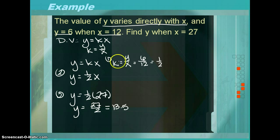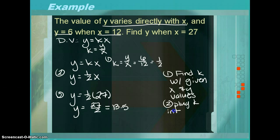So, you'll notice again that this is a three-step process. First step, find k with the given x and y values. Second step, plug k into y is equal to kx. And, the third step is to solve for the second variable.